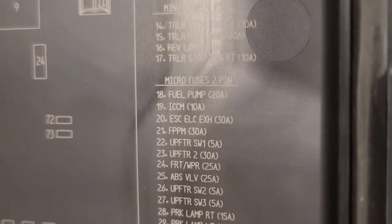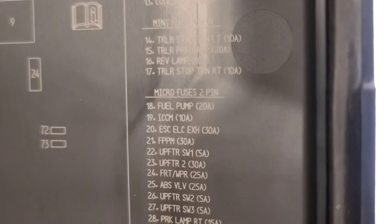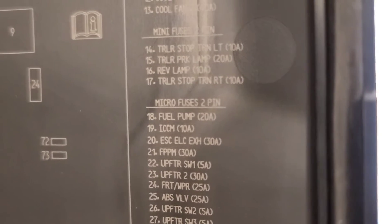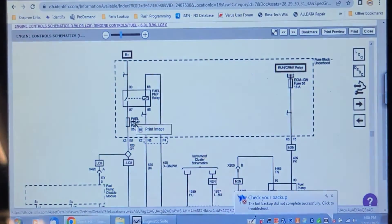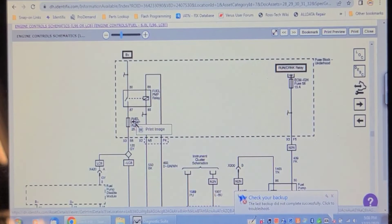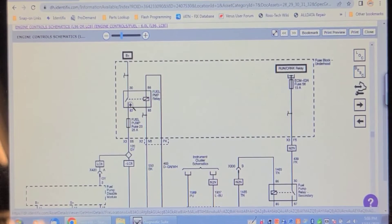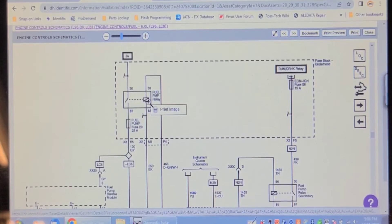It doesn't need that relay. Fuse 20 is powered up by something else. Let's have a look at fuse 20. Here you see fuse 20, it says ESC ELC EXH 30 amp, and it's a 30 amp fuse in there and it's live all the time. So that's not this circuit. I don't know why GM puts that relay in pin location 59, because it's not technically required as far as I can tell.